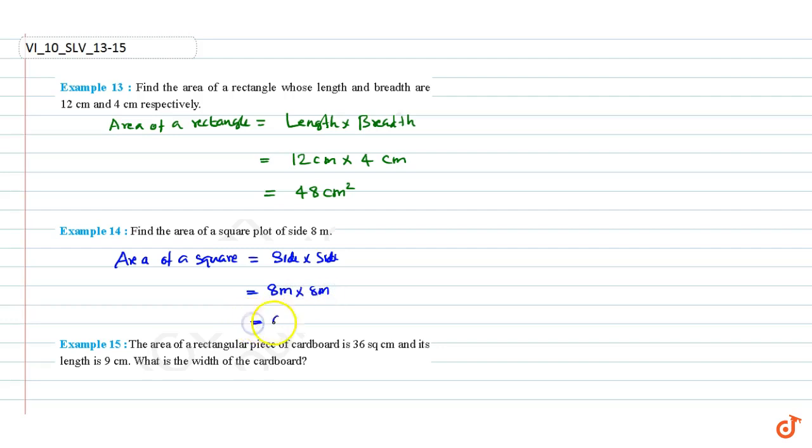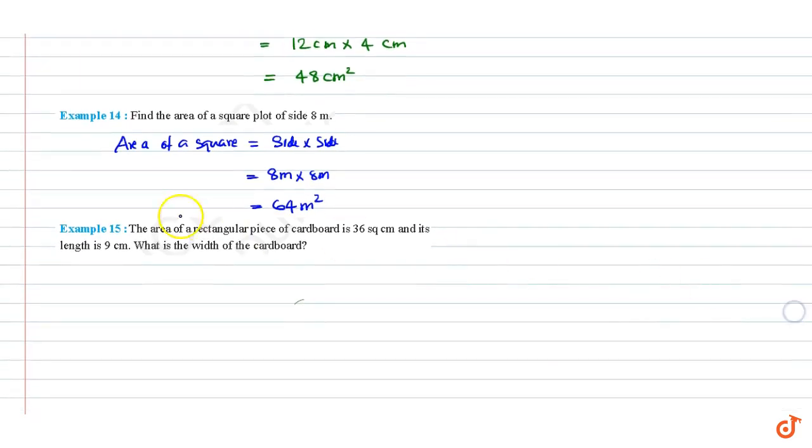Example 15: The area of a rectangular piece of cardboard is 36 square centimeters and its length is 9 cm. What is the width of the cardboard? We know that area of a rectangular piece is equal to length times breadth.